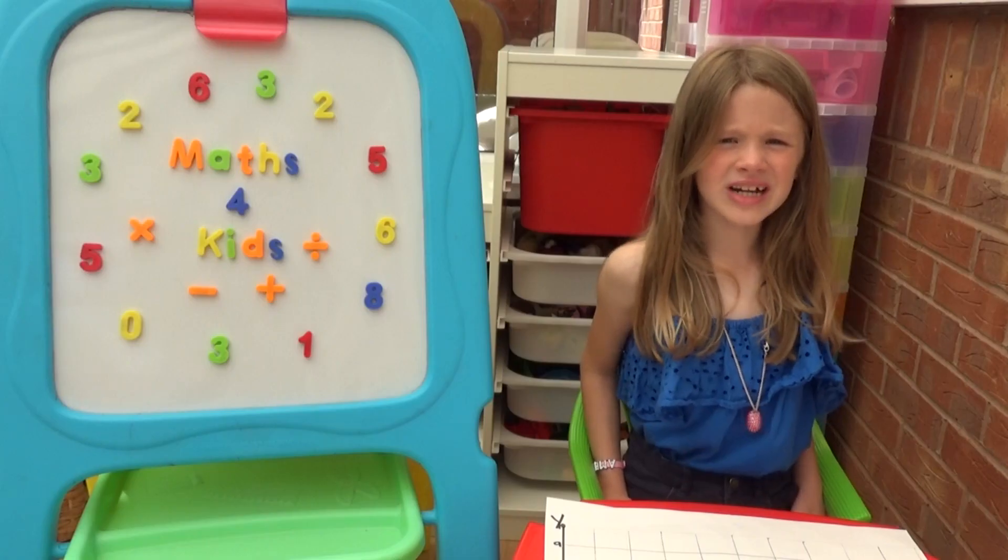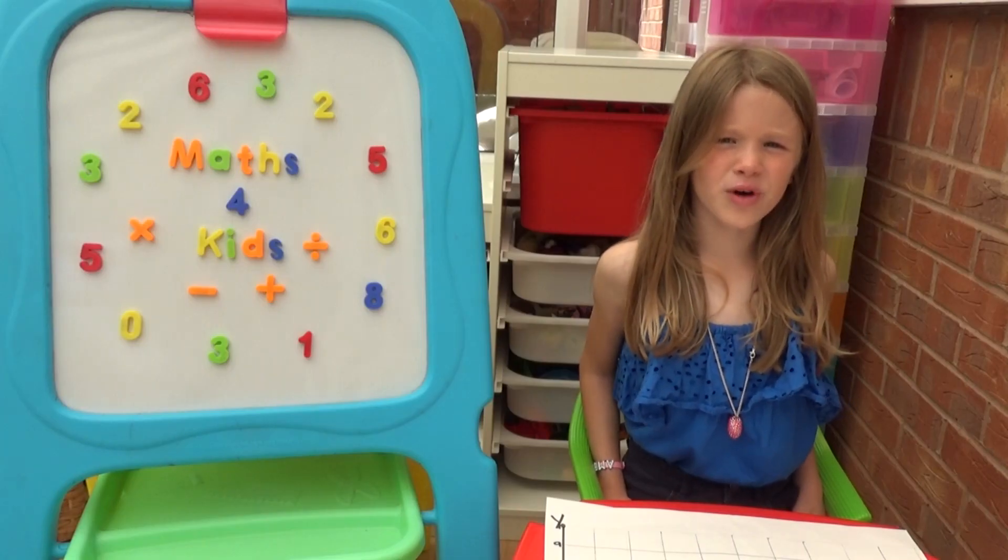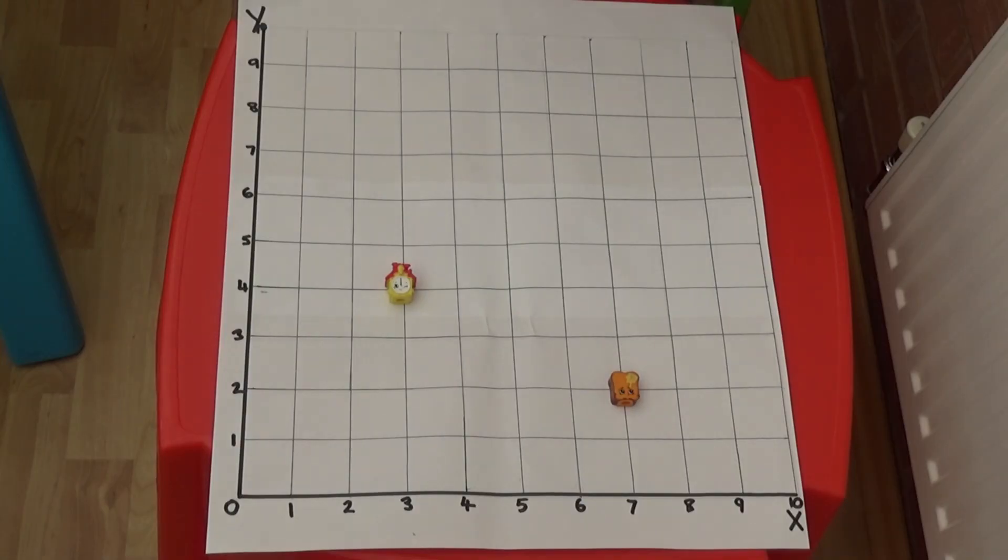Now we've drawn our grid we need to understand what is meant by coordinates. Coordinates are the way of describing the position of something. I have positioned some of my toys on this grid and I'm going to explain where they are by using the coordinates.